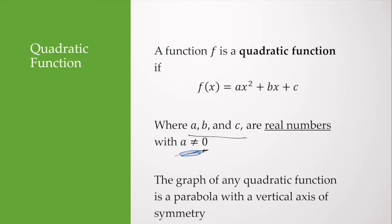The graph of any quadratic function is a parabola. One way to remember it is: quadratic function has a 'u' on the q. So the graph of any quadratic function is a parabola with a vertical axis of symmetry right down the center.